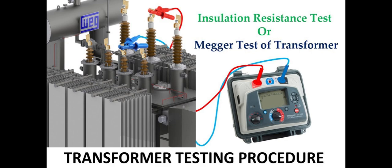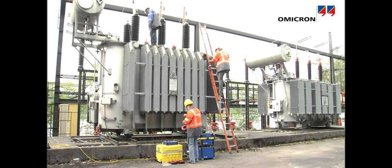6. Open Circuit Test (No-Load Test). Purpose: to determine the no-load losses, core losses, and no-load current of the transformer. Procedure: apply the rated voltage to the primary winding with the secondary winding open and measure the current and power.